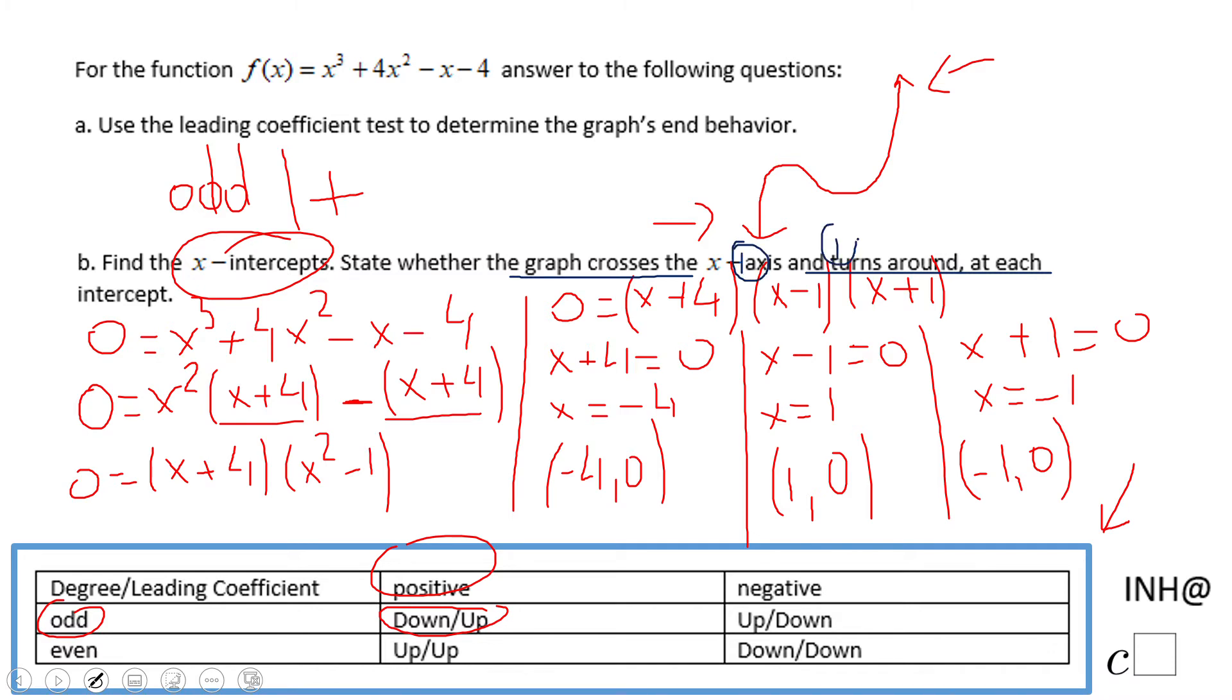For that reason we're going to look here. This is a power of 1, power of 1 invisible one. So all these powers are odd, so that means crosses. So I'm going to put that here: crosses, crosses, crosses. There is no touching and turns around at every single point. The graph is going to cross the x-axis.